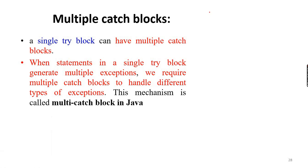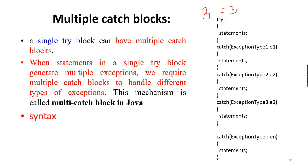If you have multiple catch blocks, we can use them to handle different types of exceptions. When the exception is generated, the code creates an exception. We see these exceptions in a statement.